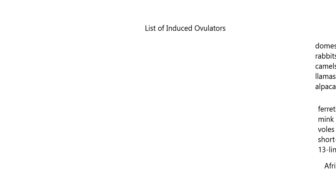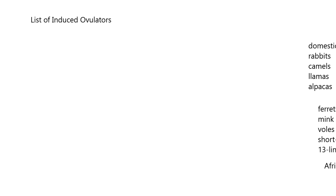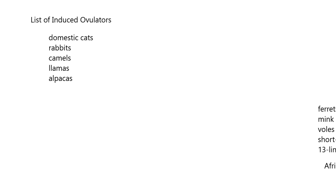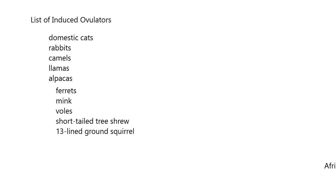Here is a list of induced ovulators, also called reflex ovulators. We have domestic cats, rabbits, camels, llamas, and alpacas — they will not ovulate until mating occurs. Additional induced ovulators include ferrets, mink, voles, the short-tailed tree shrew, the 13-lined ground squirrel, and the African lion.